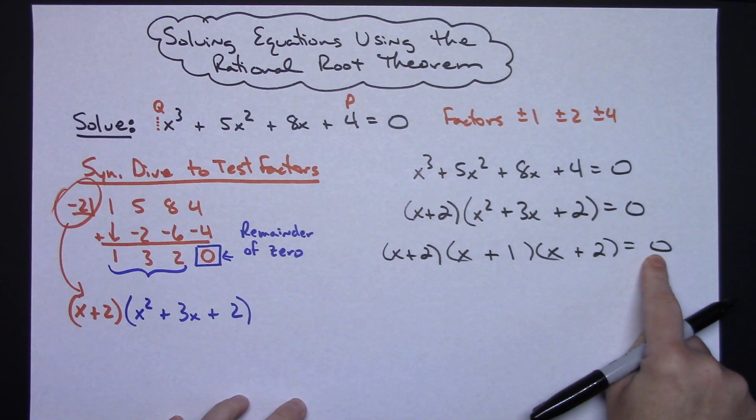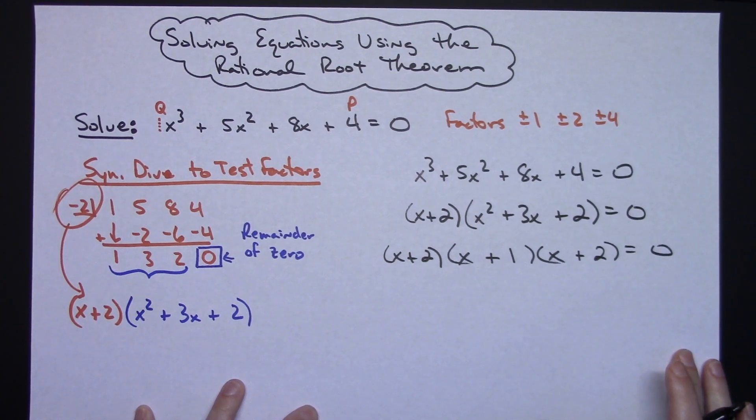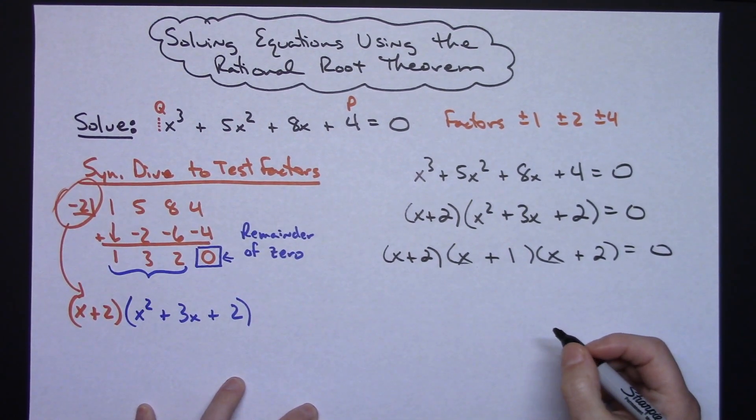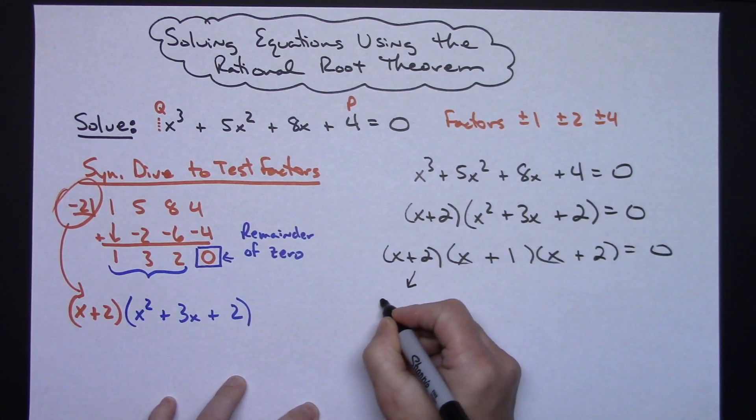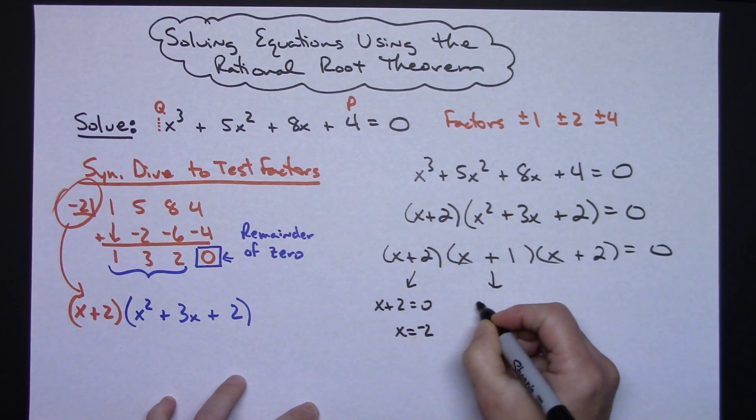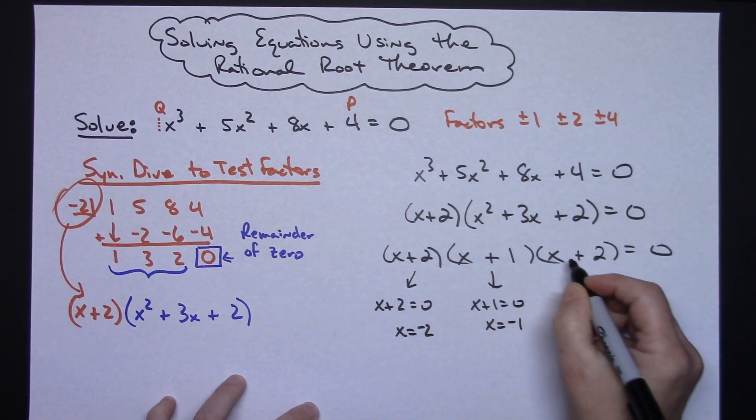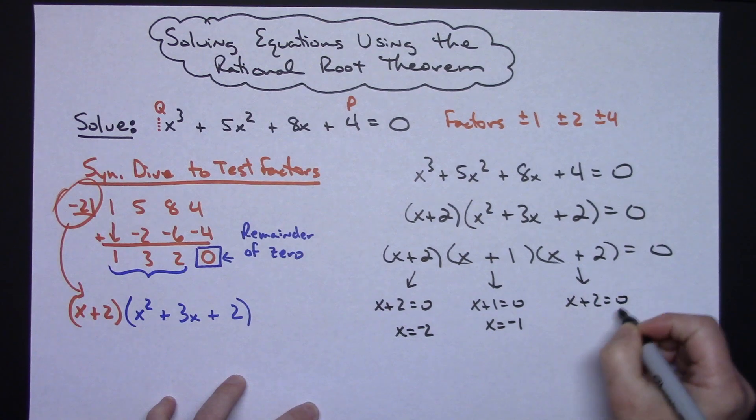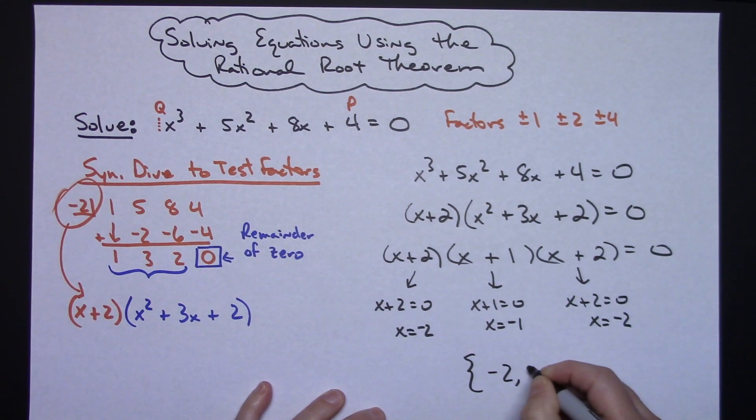Now that I have completely factored this original equation with the rational root theorem, I can use that zero product principle that says I can set each one of these equal to 0 and solve. So x plus 2 equals 0, so x equals negative 2. x plus 1 equals 0, so x equals negative 1. And then here, I'm going to get the exact same thing, x plus 2 equals 0, so x equals negative 2. So my solutions are negative 2 and negative 1, if you need to write it as a solution set.